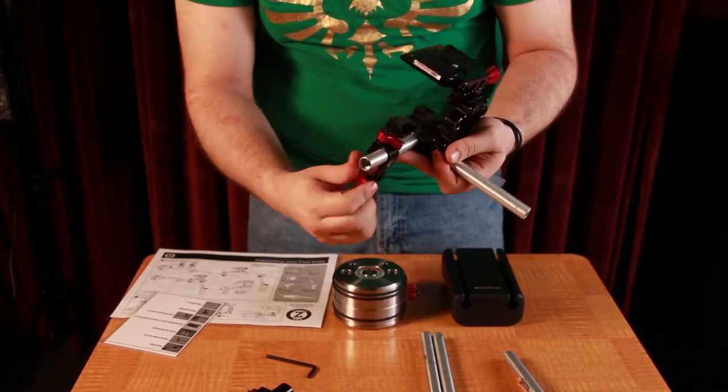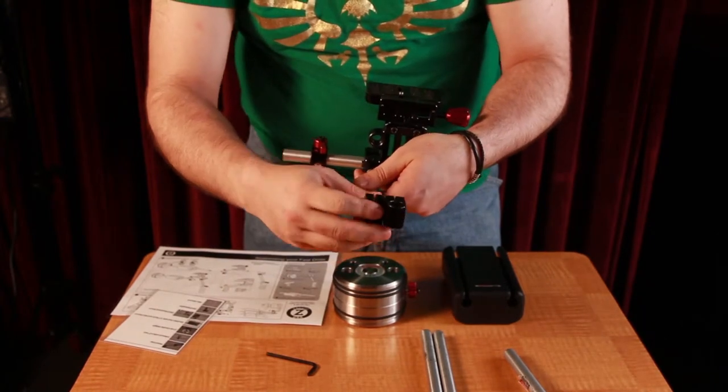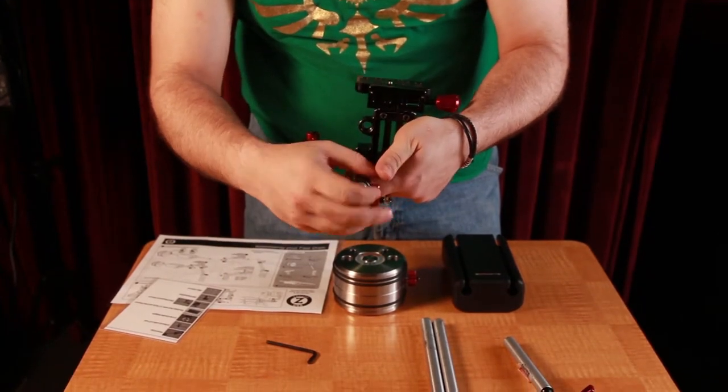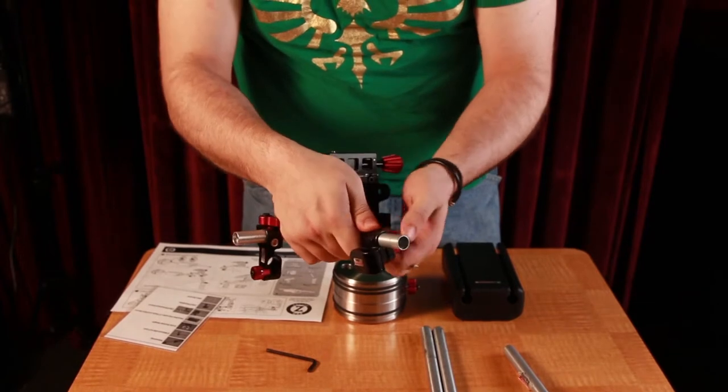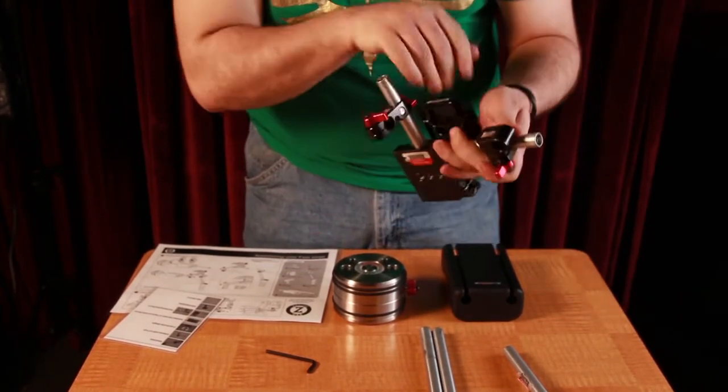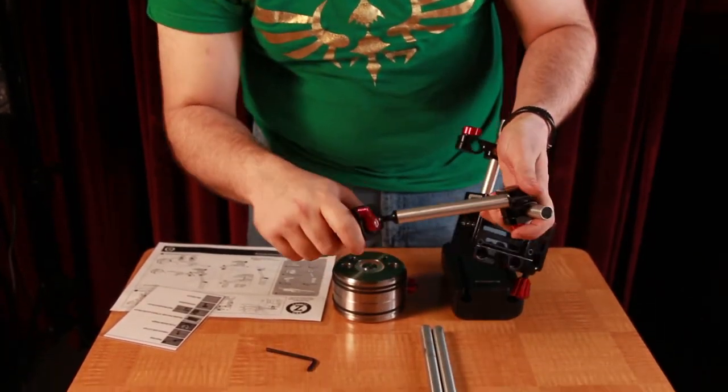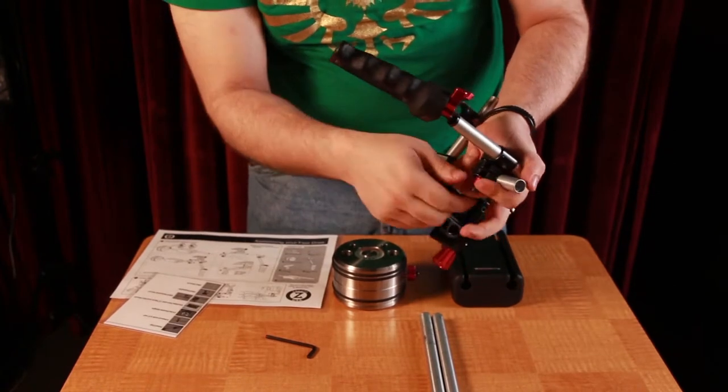Next, we're going to be adding the pistol grip. Take this C mount, slide it onto the rod, and tighten. Then take your pistol grip, slide it into the mount, and further tighten.